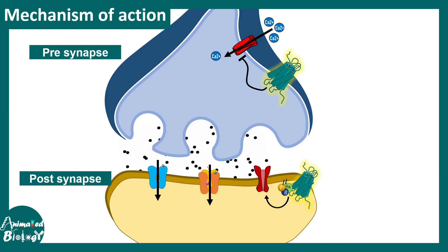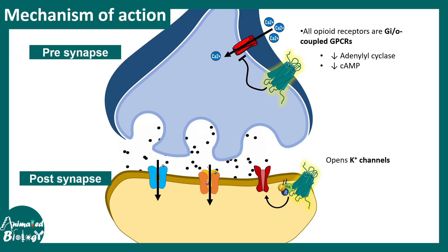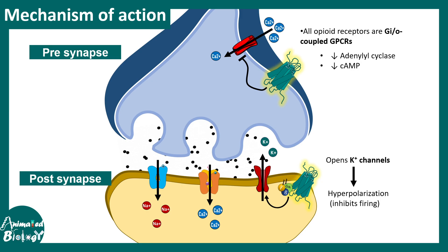At the pre-synaptic level, the opioid receptor can prevent calcium influx through calcium channels, which reduces the propensity of neurotransmitter release from the pre-synaptic terminal. It would also decrease adenylate cyclase and decrease cyclic AMP. At the post-synaptic level, it opens potassium channels and allows potassium efflux, which hyperpolarizes the neuron — making it difficult for the post-synaptic neuron to fire an action potential.